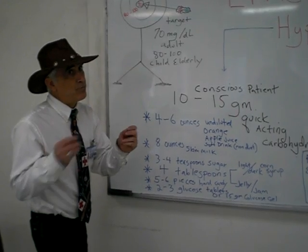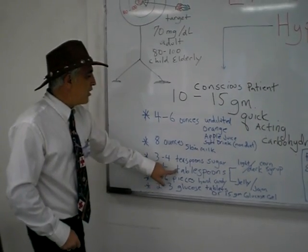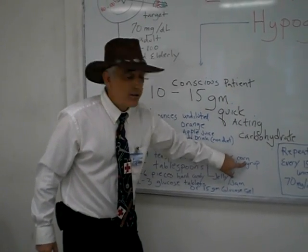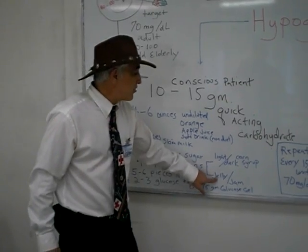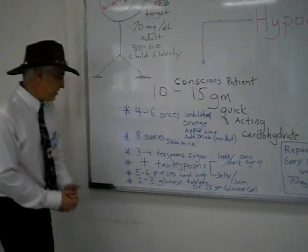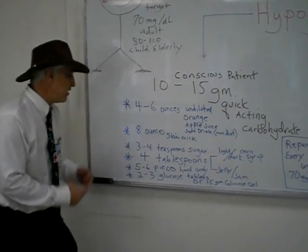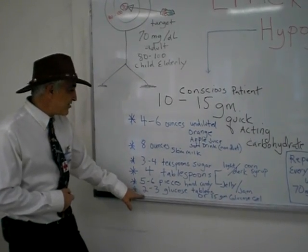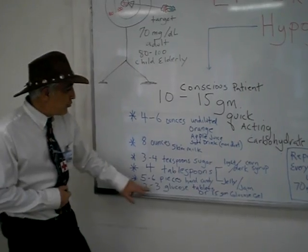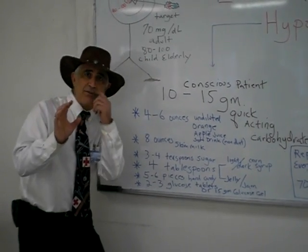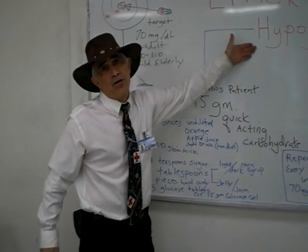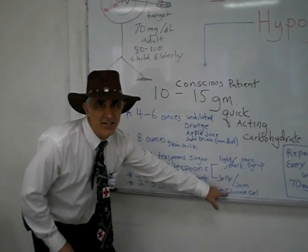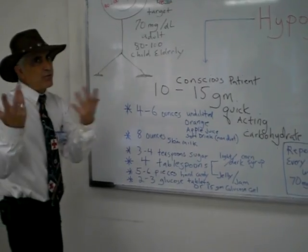Four tablespoons — remember, a tablespoon is three times bigger than a teaspoon — of either light or dark corn syrup, or four tablespoons of jelly or jam. Next, five to six pieces of hard candy. Lastly, two to three glucose tablets, which are specifically designed for patients going through a hypoglycemic episode, or 15 grams of glucose gel.